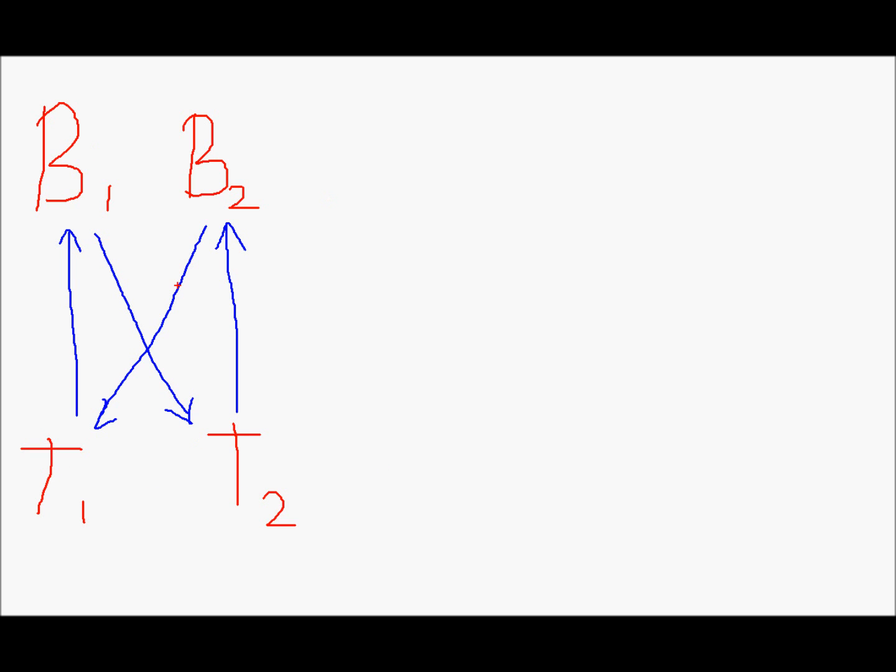We'll model the situation using a graph. So first we'll write the processes. We have two processes over here, B1 and B2. Processes are enclosed in circles. So we'll draw a circle around B1 and B2. And we have two resources T1 and T2. Resources are enclosed in square boxes.